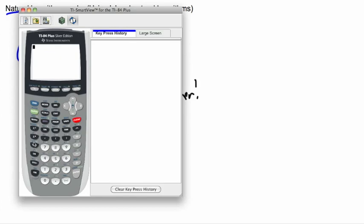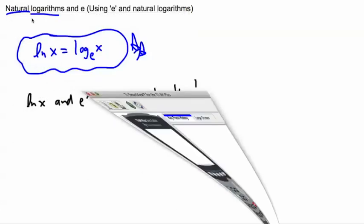That meant logs and 10 to the X, they undo each other. Well, natural logs and E to the X undo each other. So LN and E to the X are sort of opposites.